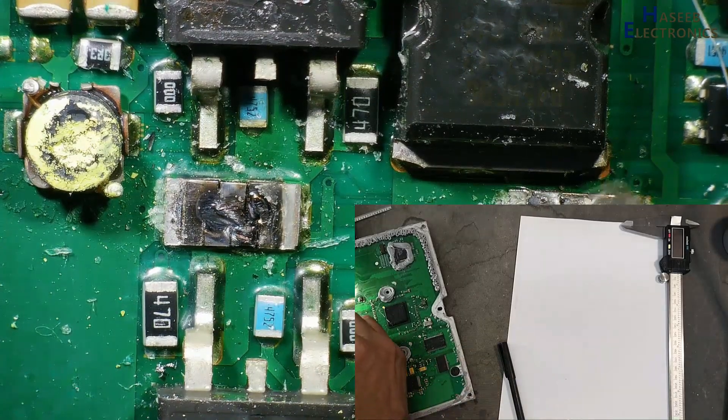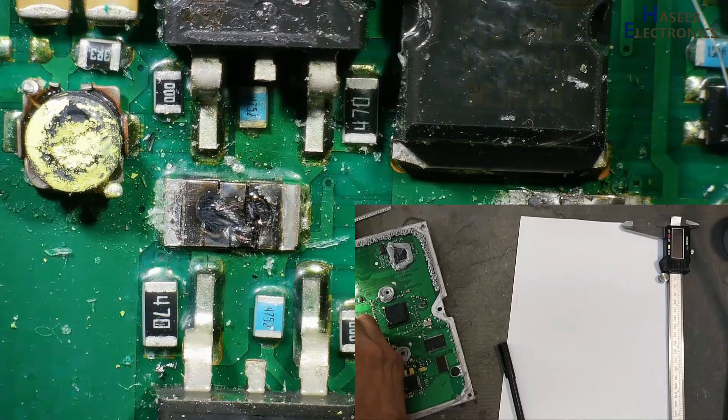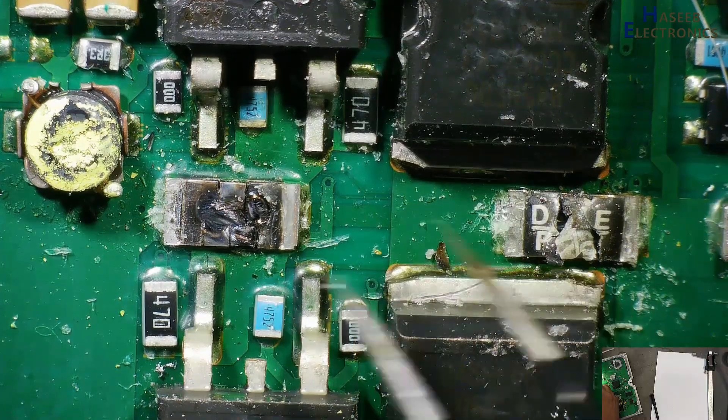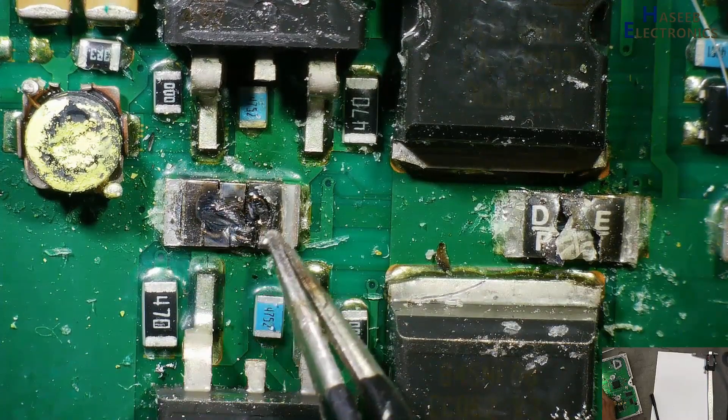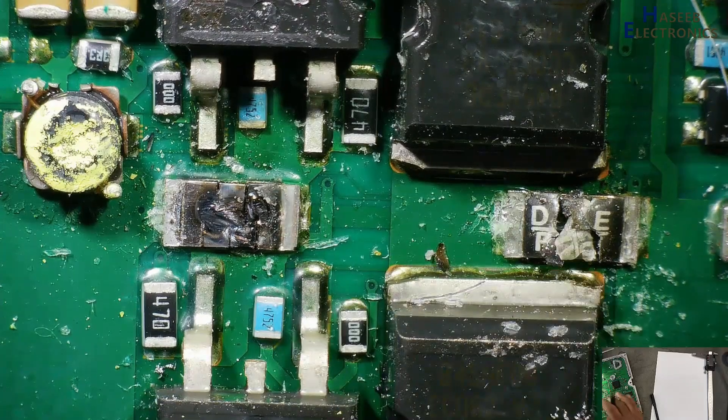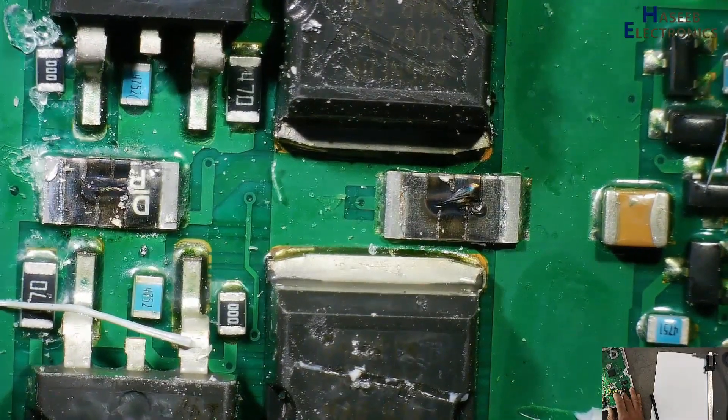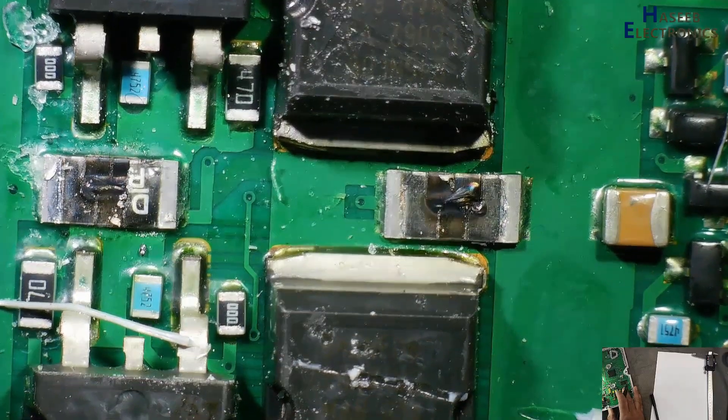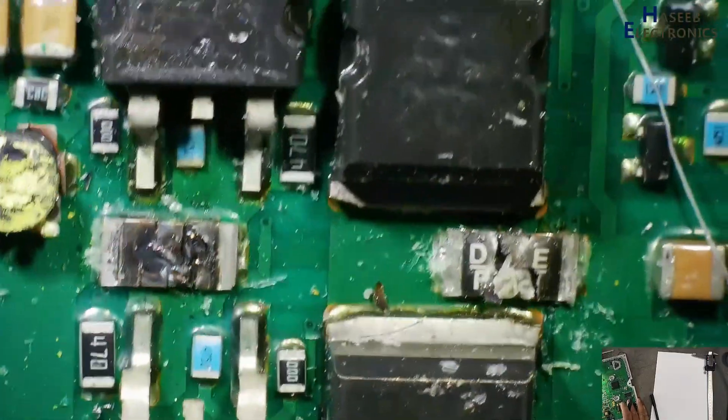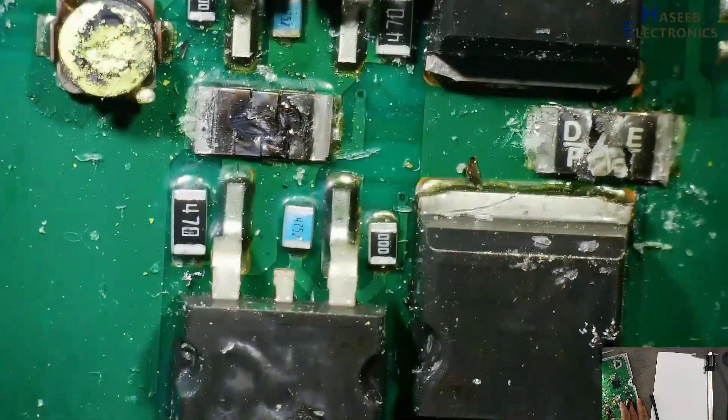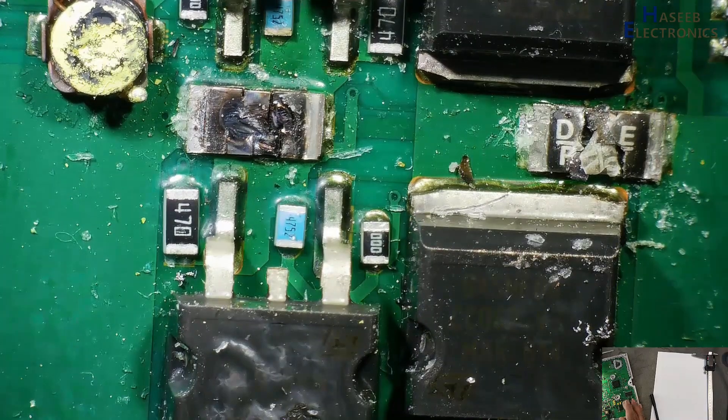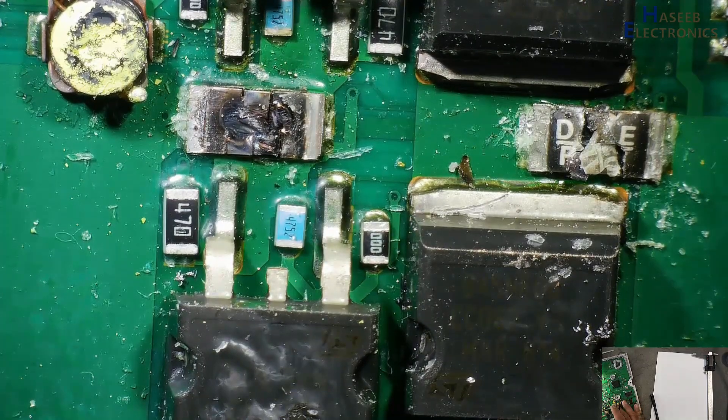I have this ECM electronic control module and there are many resistors damaged. This one, this one. These are SMD chip resistors for current sensing. How we can find its value, its power rating and its part number.